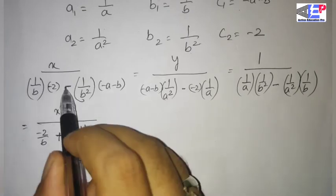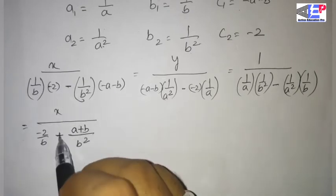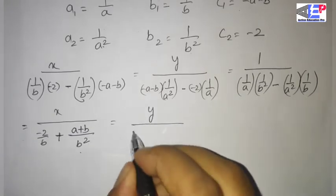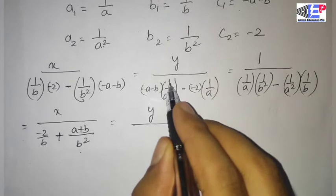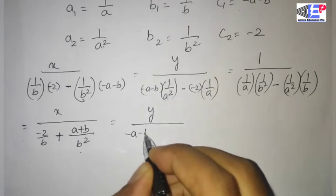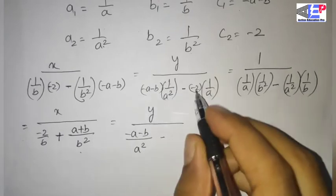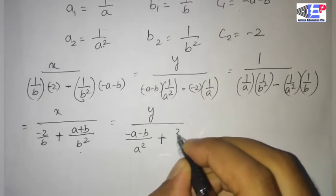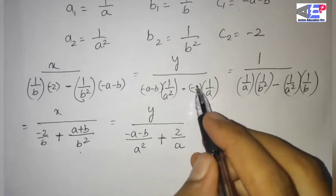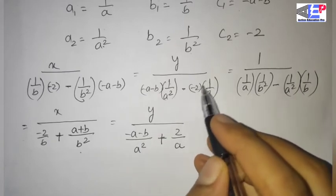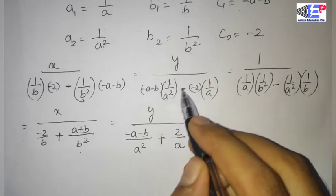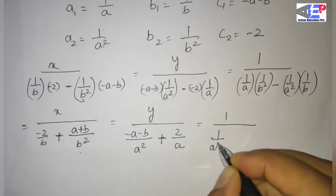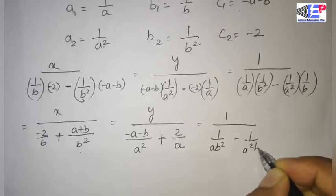Minus 2 by b² — bracket minus plus a plus b by b² — y simplify. Minus 1 minus a minus b by a². Minus 2 bracket minus plus a2 by a1 — minus plus — is equal to 1 by a·b² minus 1 by a²·b.